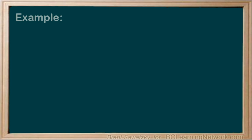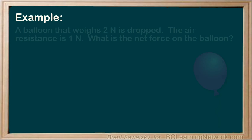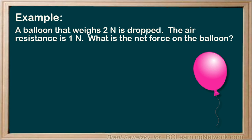Let's consider another example. This time, a balloon that weighs two newtons is dropped. The air resistance is one newton. What is the net force on the balloon? We'll start with a free body diagram. We have the force of gravity again pointing down, and it's two newtons, as it weighs two newtons.